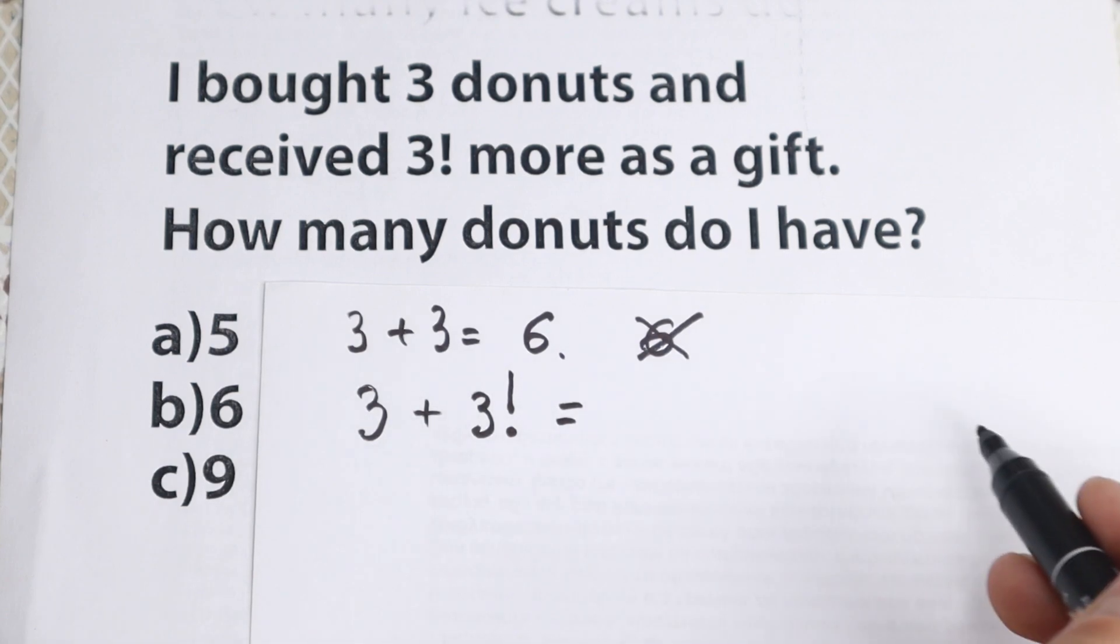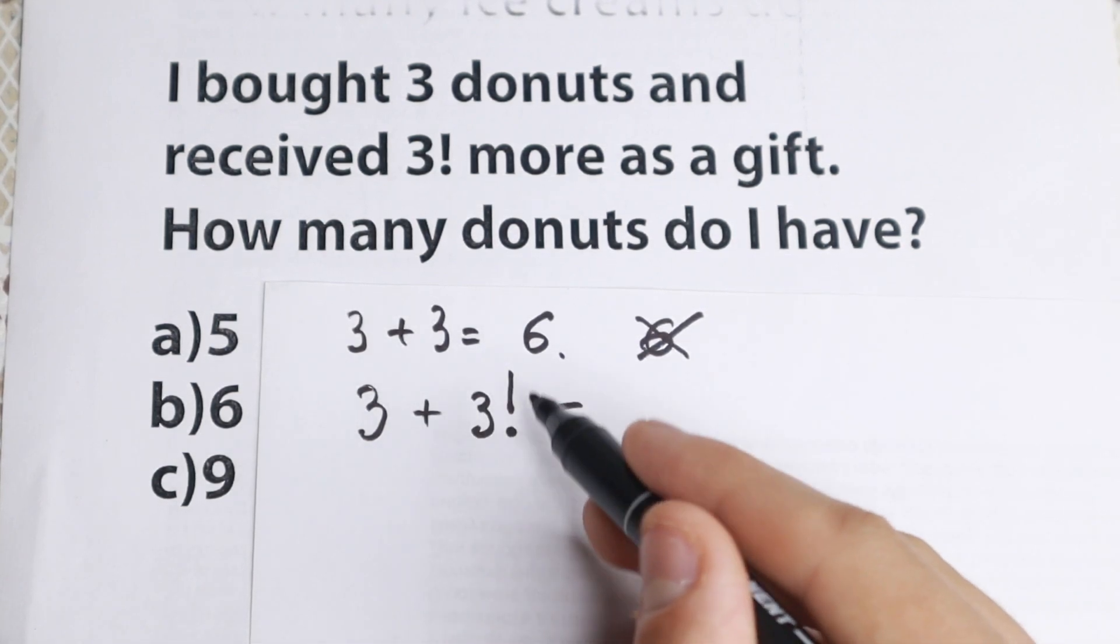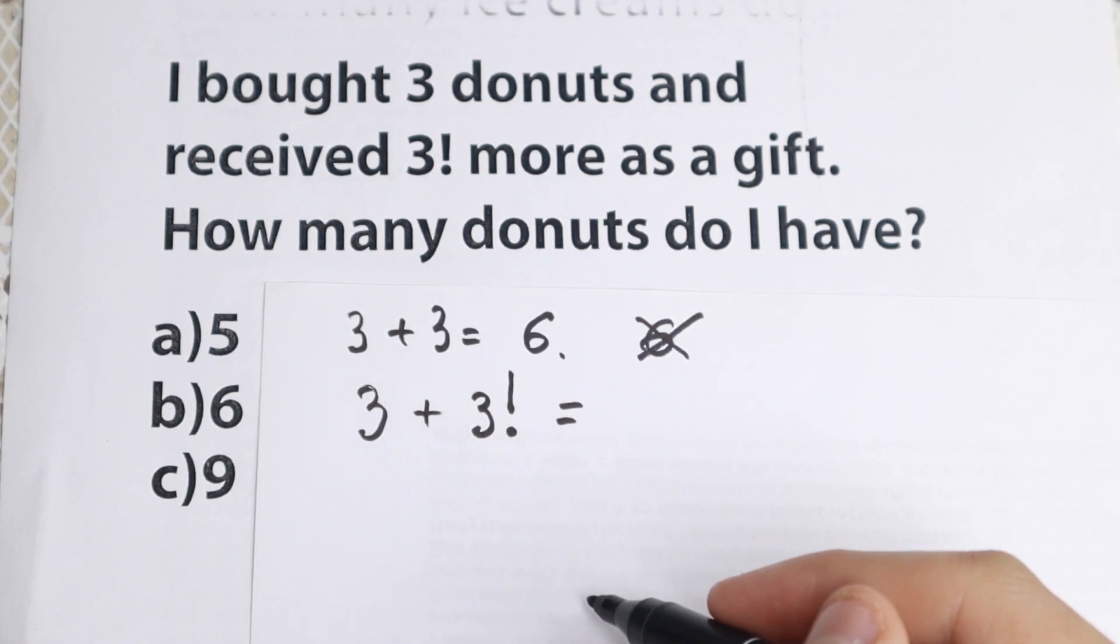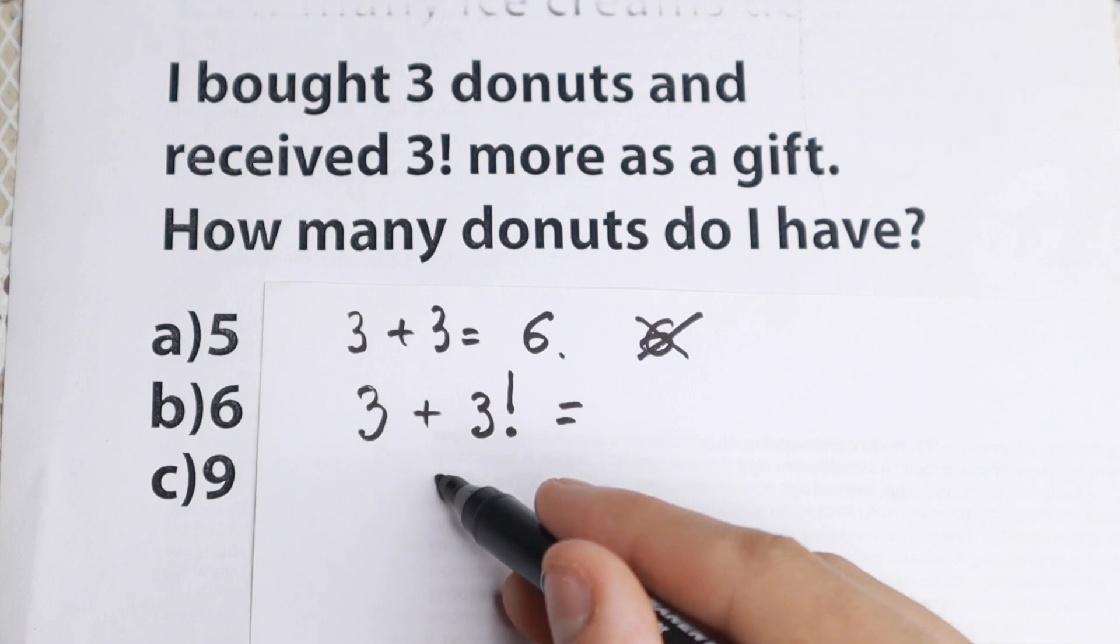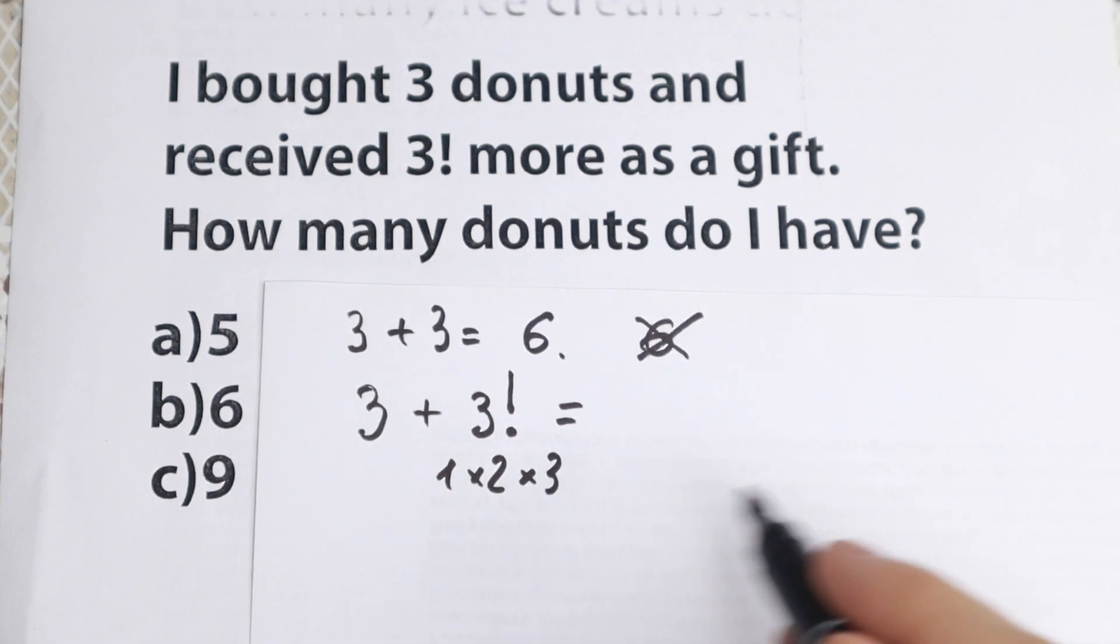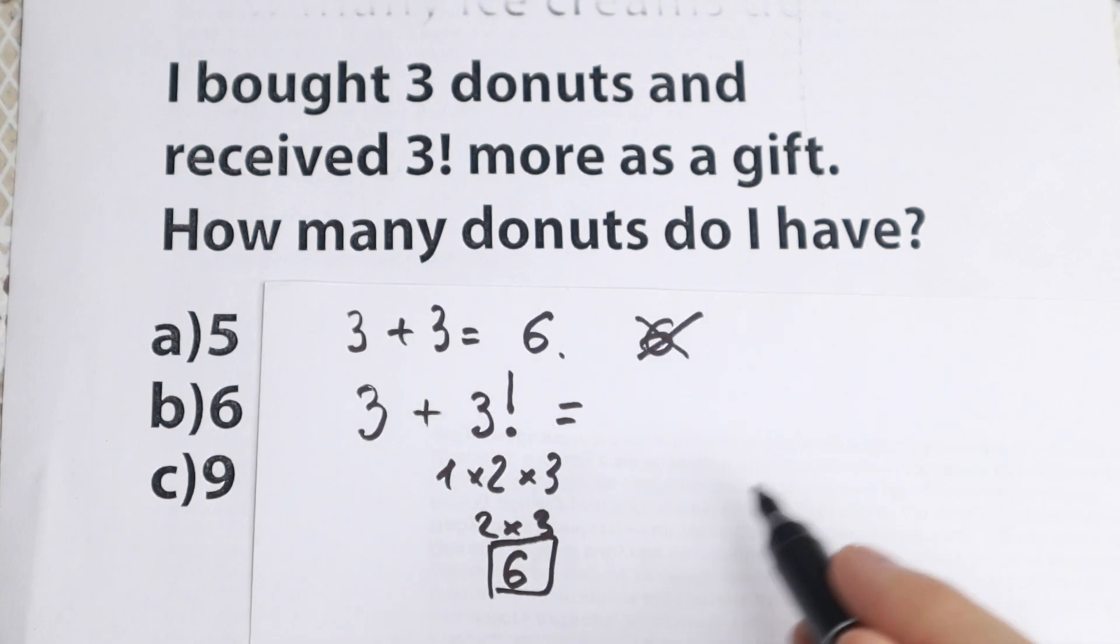As a result what about factorial? We need to know it because we can't solve it without knowing this term, this factorial. So as a result 3 factorial, this is a product from 1 to 3. We will have 1 times 2 times 3. Okay let's multiply it. 1 times 2 times 3 equal to 2 times 3 equal to 6. So as a result 3 factorial equals 6.